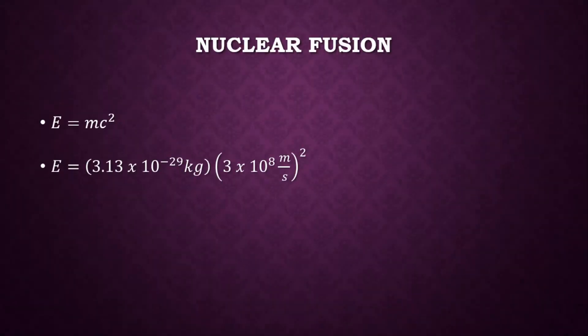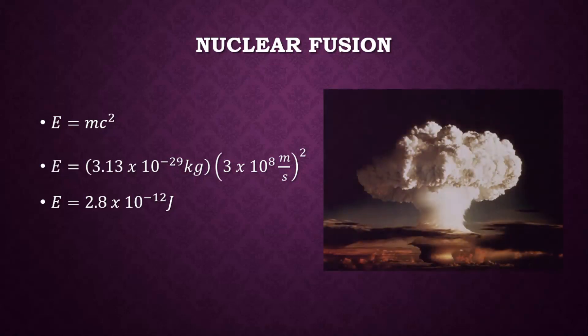If we plug in a mass of 3.13 times 10 to the negative 29 kilograms and multiply it by the speed of light in a vacuum squared, we get an energy of 2.8 times 10 to the negative 12 joules. This all by itself is not that much energy. But when you have this reaction happening many, many times all at once, you do get a lot of energy, such as in the sun or in a nuclear explosion.